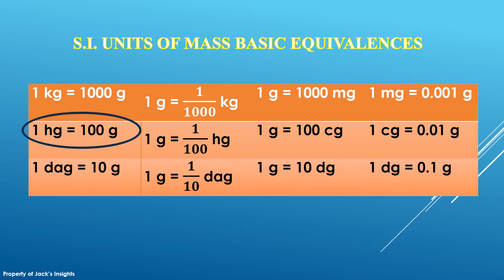1 hectogram equals 100 grams. 1 gram equals 1 over 100 hectogram. 1 decagram is 10 grams and 1 gram is 1 over 10 decagram or 0.1 decagram. Same idea applies to the other units.